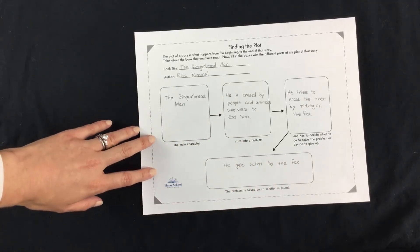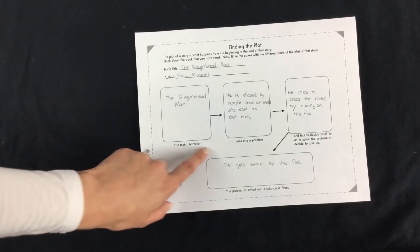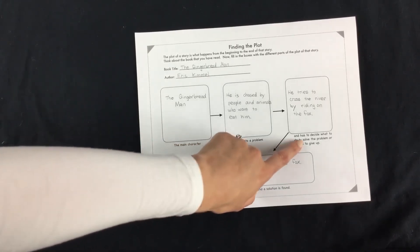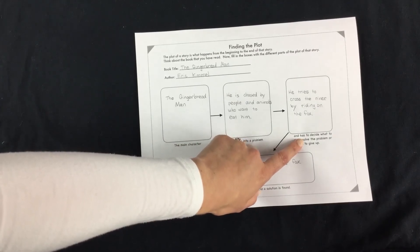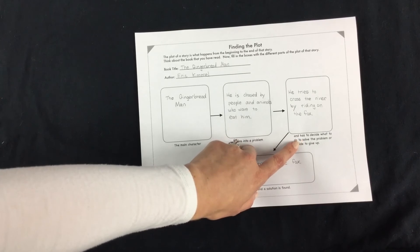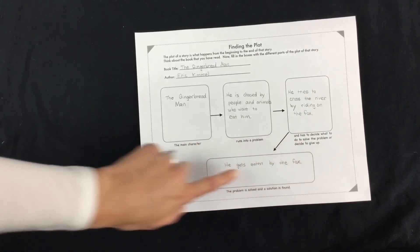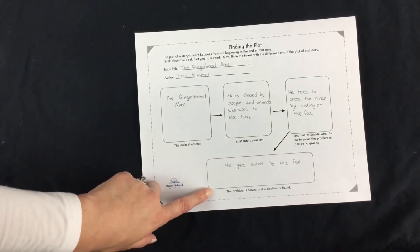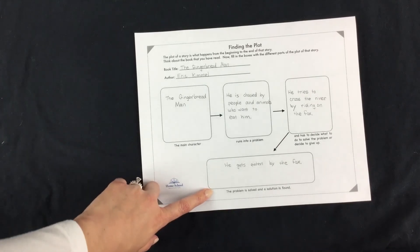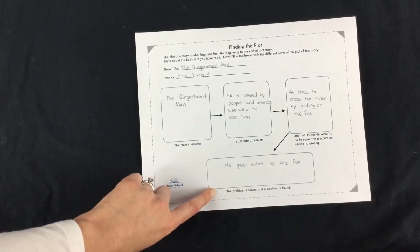Go ahead and take a look at the book that you've read, identify the main character, the problem, the decision that main character has to make of how to solve that problem, or avoid the problem altogether. And then the very end. What happens at the very end? How is that problem solved? Okay, happy reading.